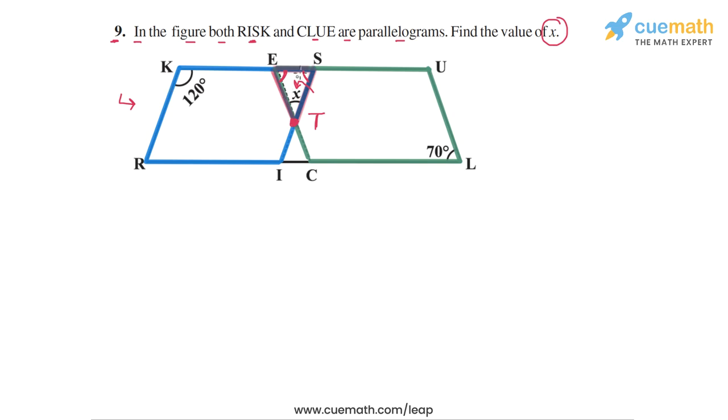The interesting thing is that both of these angles can be easily found because the angle at E, which is angle SET, is opposite to this angle 70 degrees in the parallelogram CLUE. And similarly, the angle at S is adjacent to this angle at K, 120 degrees, in the parallelogram RISK. So both of these angles can be found easily.